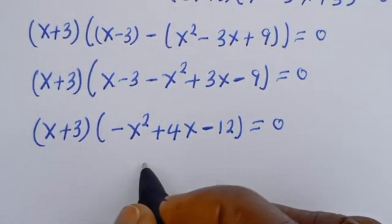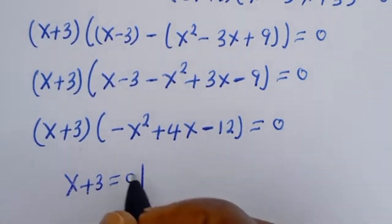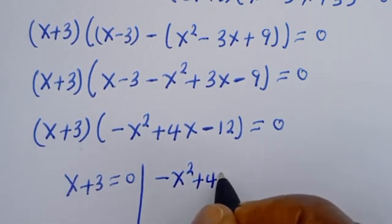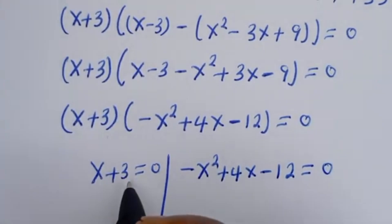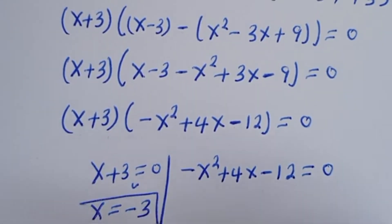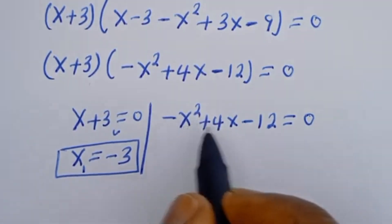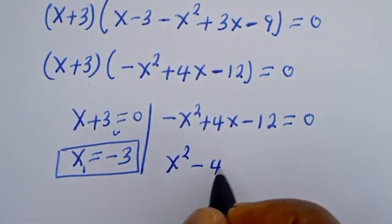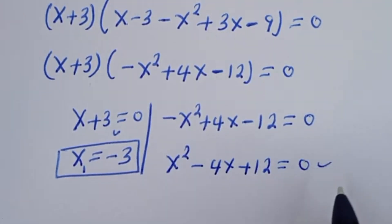From here there are two cases. Case one: S plus 3 equals 0, giving S is equal to minus 3. This is the first value, S₁ equals minus 3.